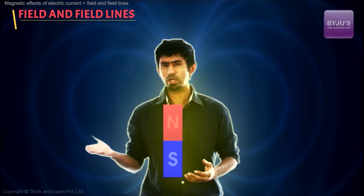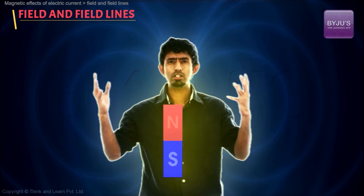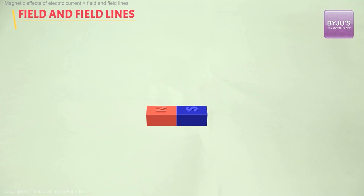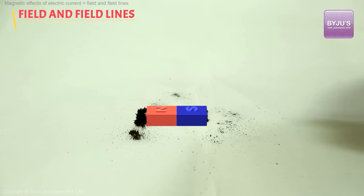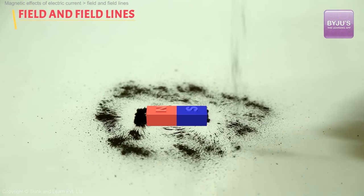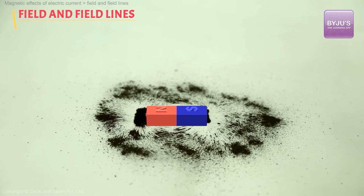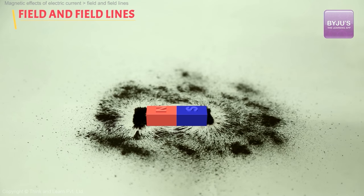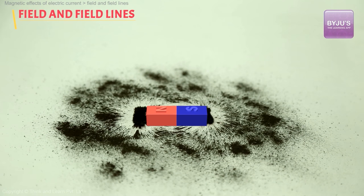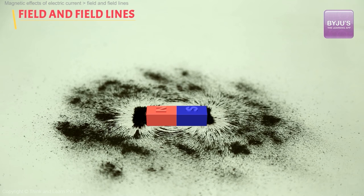So how exactly do we look at this influence? How could we imagine it? Let's do something very interesting. Let us take this bar magnet, put it on a piece of paper, and on that piece of paper let's sprinkle what are called iron filings — these little pieces of iron. Iron is very useful for this purpose because it gets very strongly attracted to magnets. So you take tiny, tiny pieces of iron and sprinkle them all across the paper, then gently begin to tap the paper.